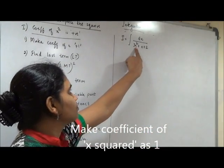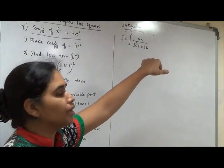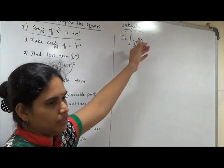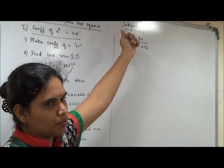So you know what is the number present? 3. How will you make it plus 1? By dividing each term over here by 3 or in other words, take 3 common from the denominator. That's the first step.